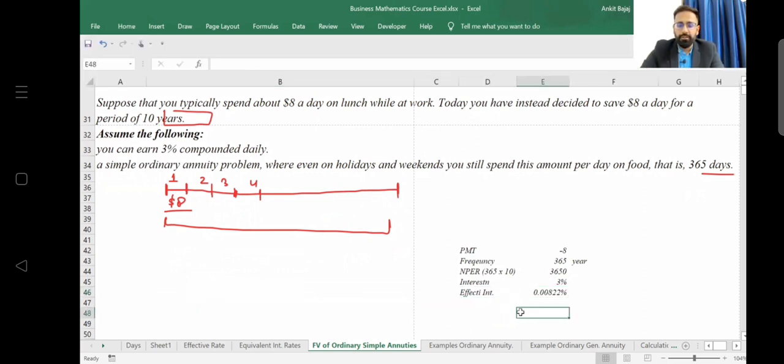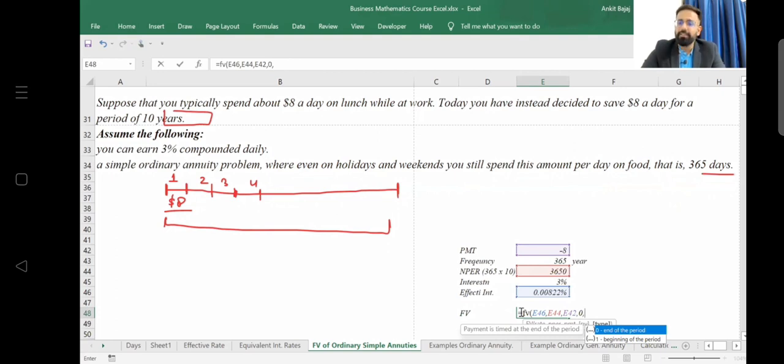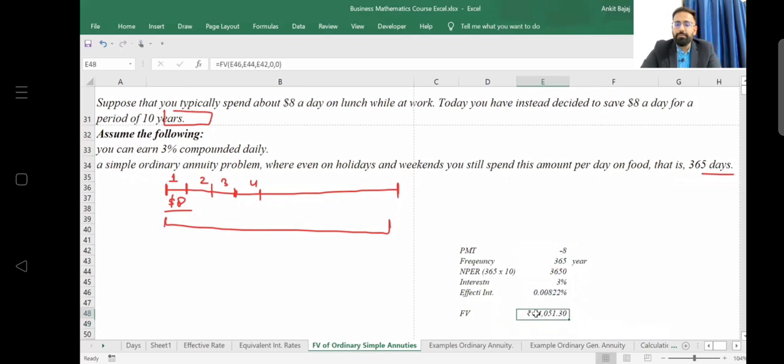Now if I want to calculate future value, future value of investment is going to be - that is future value function. Open up the bracket: rate is 0.0822%, then NPER - number of periods - that is 3,650. PMT, how much you will be investing? $8 daily you will be investing. PV is zero. And if nothing is given, we can take end of the period. If you are assuming that you will earn interest from day one, you can assume beginning of the period. So I will take zero here as present value and calculate what will be the value of my investment.